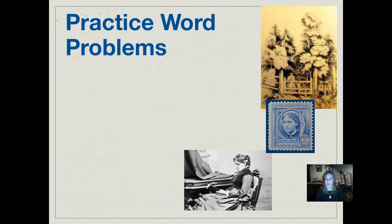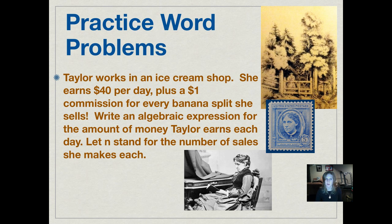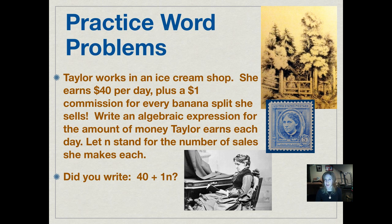Now we'll practice using a word problem. Taylor works in an ice cream shop. She earns $40 per day, plus a $1 commission for every banana split she sells. Write an algebraic expression for the amount Taylor earns each day, letting n stand for the number of sales she makes. The answer is 40 + 1n. We don't know what n equals — if she sold 20 banana splits, we'd multiply 1 × 20 = $20 in commission, so 40 + 20 = $60. We need the 1 there because it represents that $1.